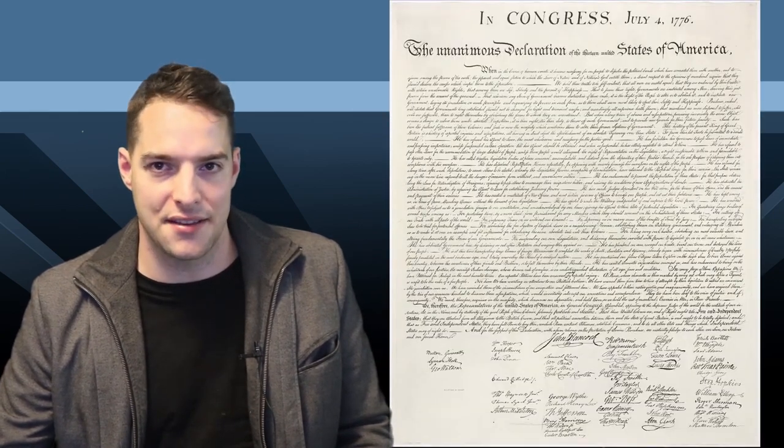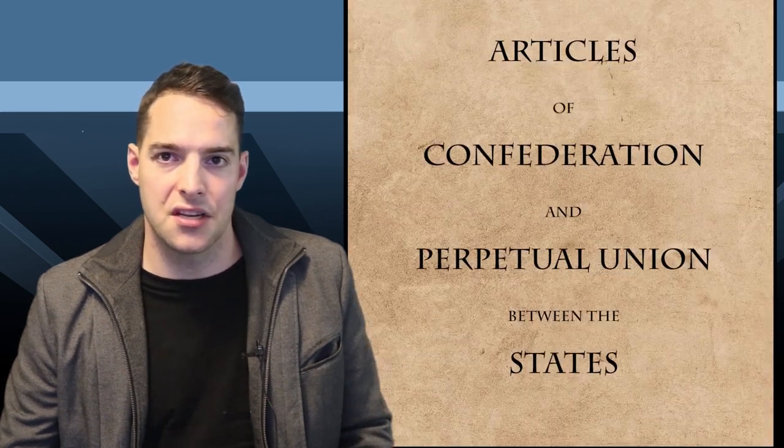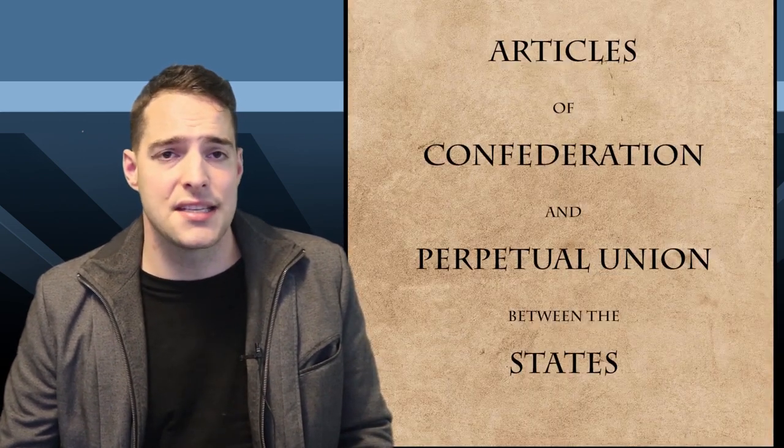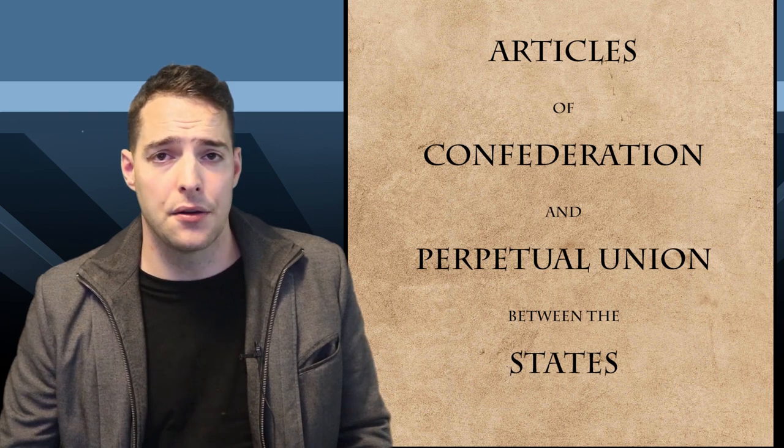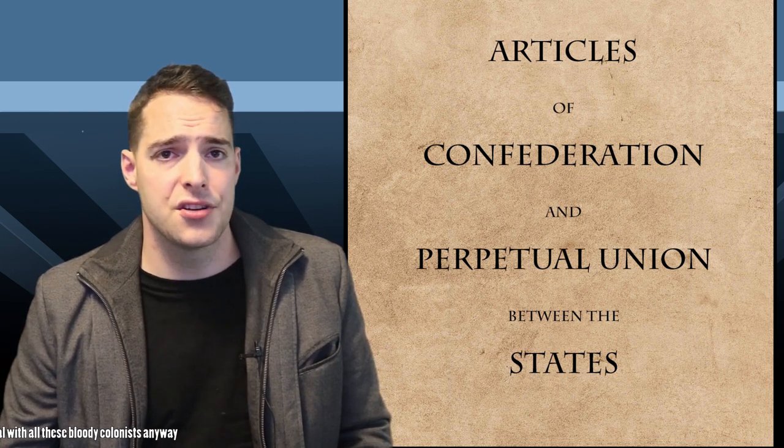We start in 1776. A group of influential men have been secretly writing one of the most important documents in American history. On the 4th of July, after almost a year of war with Britain, delegates from the 13 colonies vote to approve the Declaration of Independence. In 1781, all 13 states ratified the Articles of Confederation, which outlined an early system of government. Two years later, the war with Britain ended, and in 1788, the Articles of Confederation were replaced with our current Constitution.